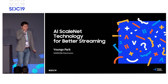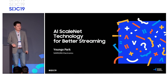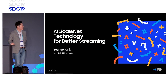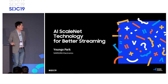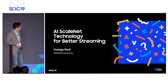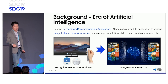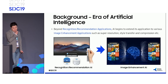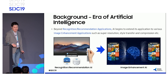Hello everyone. I'm Youngho Park, working at Samsung Research in Seoul. My research topic is artificial intelligence for image and video processing, such as compression, super resolution, and image enhancement. Today I'm going to tell you about image processing technology powered by AI. The session title is AI ScaleNet Technology for Better Streaming. Nowadays is the era of artificial intelligence — I think no one denies it. However, until now, the main AI research subject was recognition, classification, or recommendation problems. Samsung Bixby or object classification in images are representative examples. Meanwhile, AI has begun to extend its applications to various fields, and image enhancement is one of them.